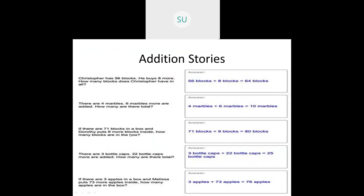Then if there are 71 blocks in a box and Dorothy puts 9 more blocks inside, how many blocks are there in the box? 71 blocks plus 9 blocks is 80 blocks. There are 3 bottle caps, 22 bottle caps more are added. So 3 plus 22 bottle caps gives you 25 bottle caps. Then if there are 3 apples in a box and Melissa puts 73 more apples inside, how many apples are there? 3 apples plus 73 apples is 76 apples.